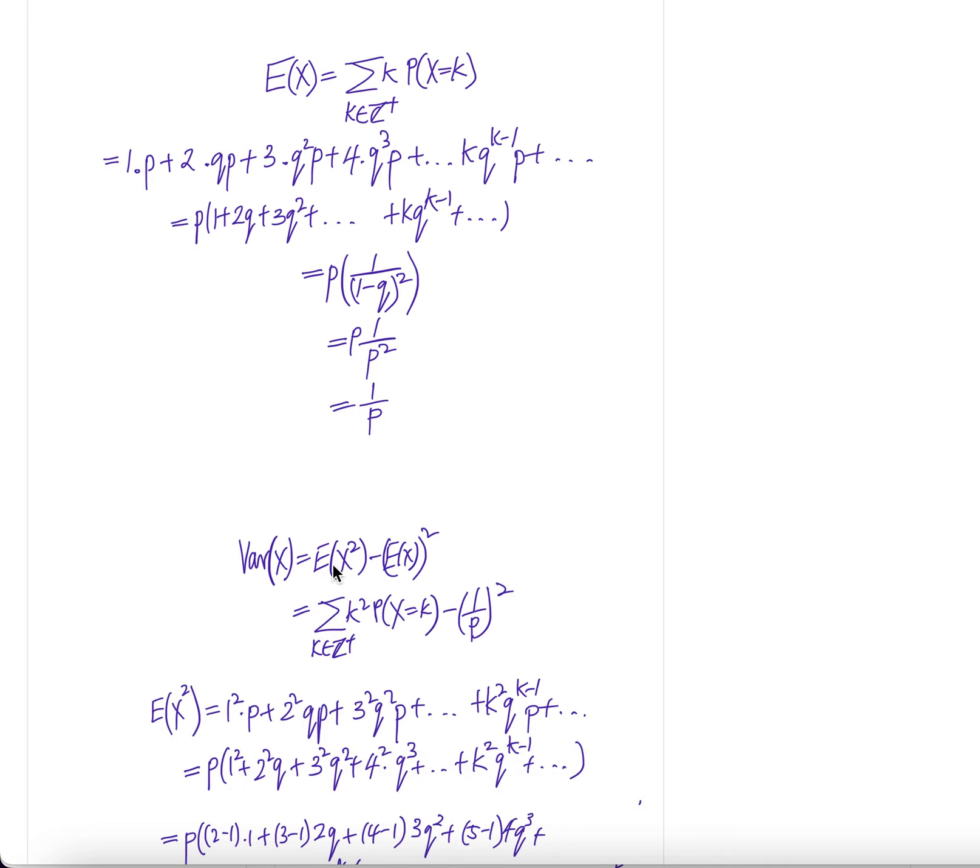Variance, the definition is given by expectation of X square minus expectation of X, whole thing squared. And then if you write it this way, it will be summation k square times probability of X equal k, k positive integer, and then this one is 1 over p square.